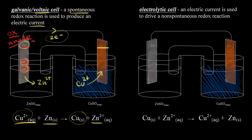This is reduction — gain of electrons is reduction — so reduction is occurring at our copper electrode, making this the cathode. Remember 'red cat' to remember that one. So the copper electrode must be our positive electrode. This reaction is spontaneous; the standard cell potential, E°, is positive 1.10 volts.